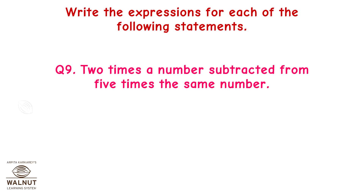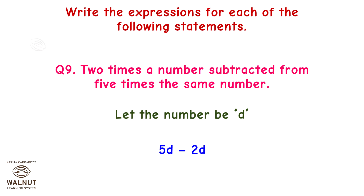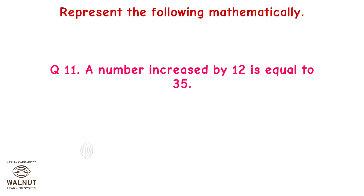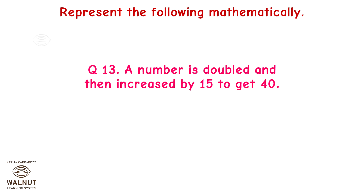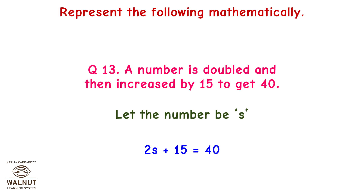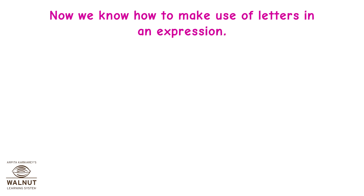Question 9: 2 times a number subtracted from 5 times the same number. Let the number be D. Hence we get 5D minus 2D. Question 11: A number increased by 12 is equal to 35. Let the number be A. Hence we get A plus 12 is equal to 35. Question 13: A number is doubled and then increased by 15 to get 40. Let the number be S. Hence we get 2S plus 15 is equal to 40.